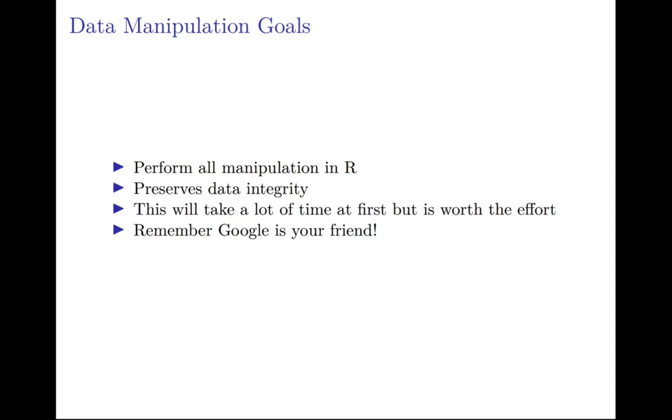So what are our goals for data manipulation as data scientists? Well, we want to be sure that we're manipulating all of our data in R, and this is really important because it preserves data integrity. It allows you to go from your raw data to any sort of cleaning to your final analysis all in one set of code. That's important because it allows you to recreate anything that you do and also allows you to find any mistakes you might have made.